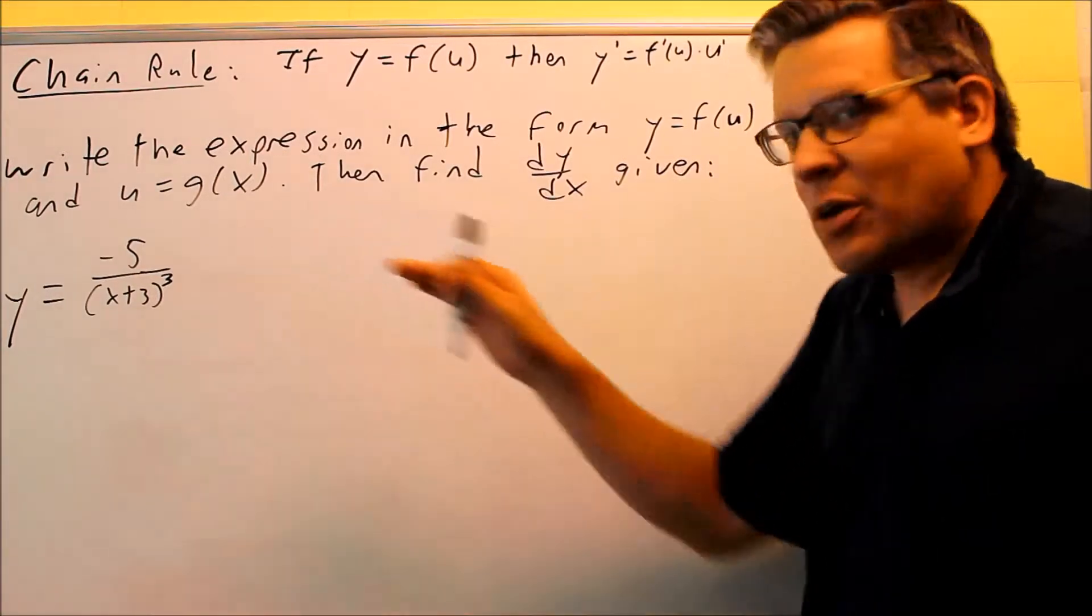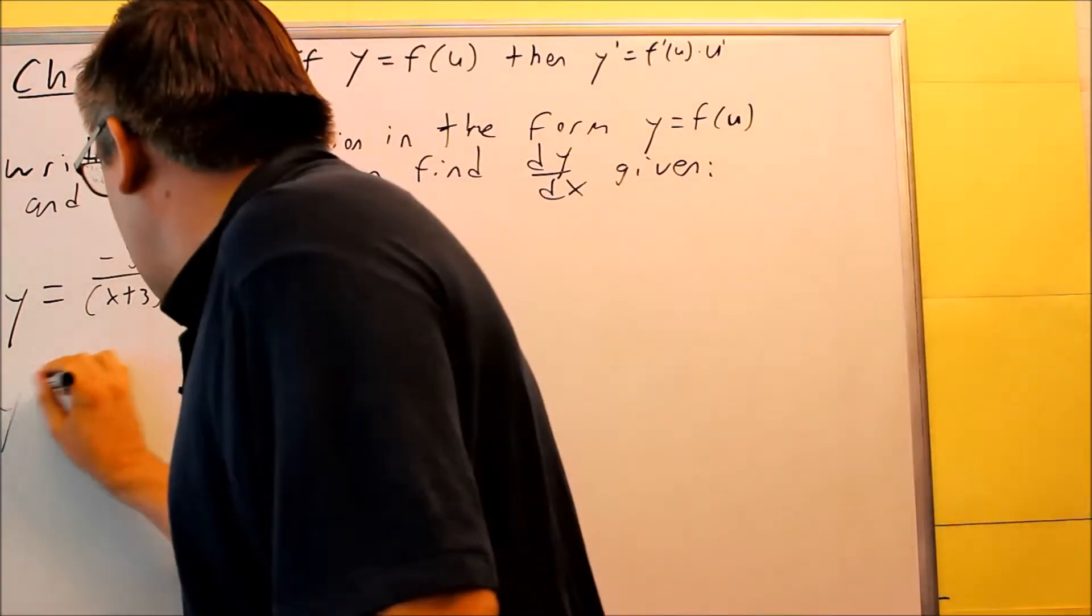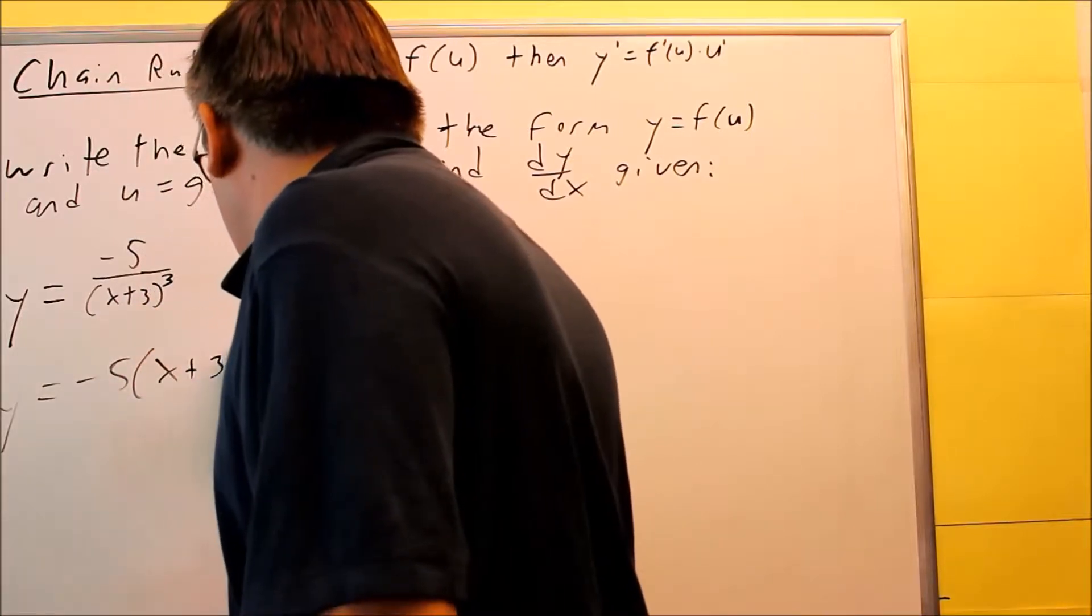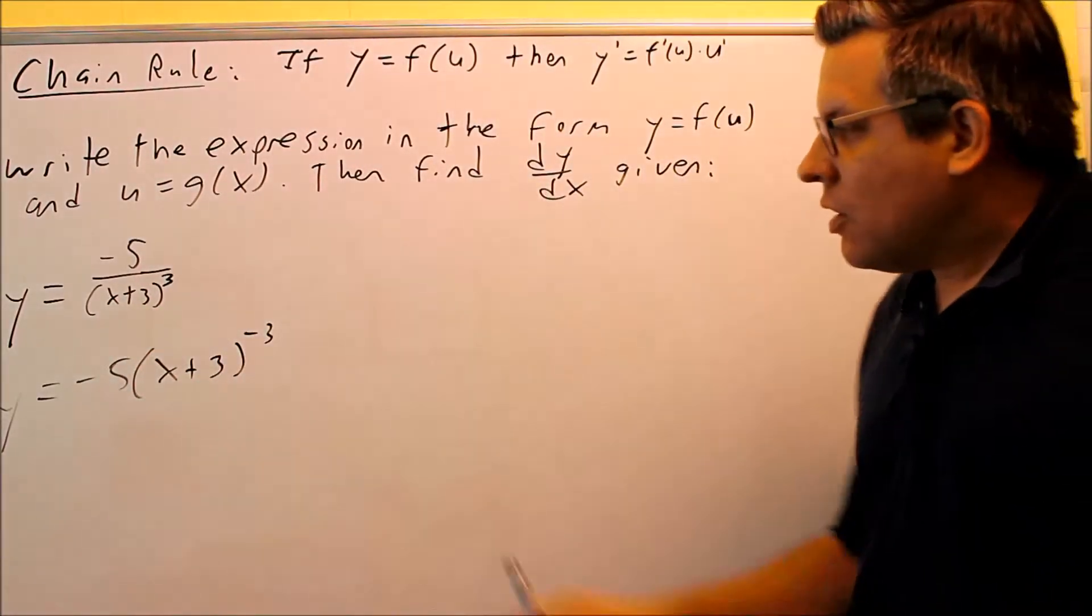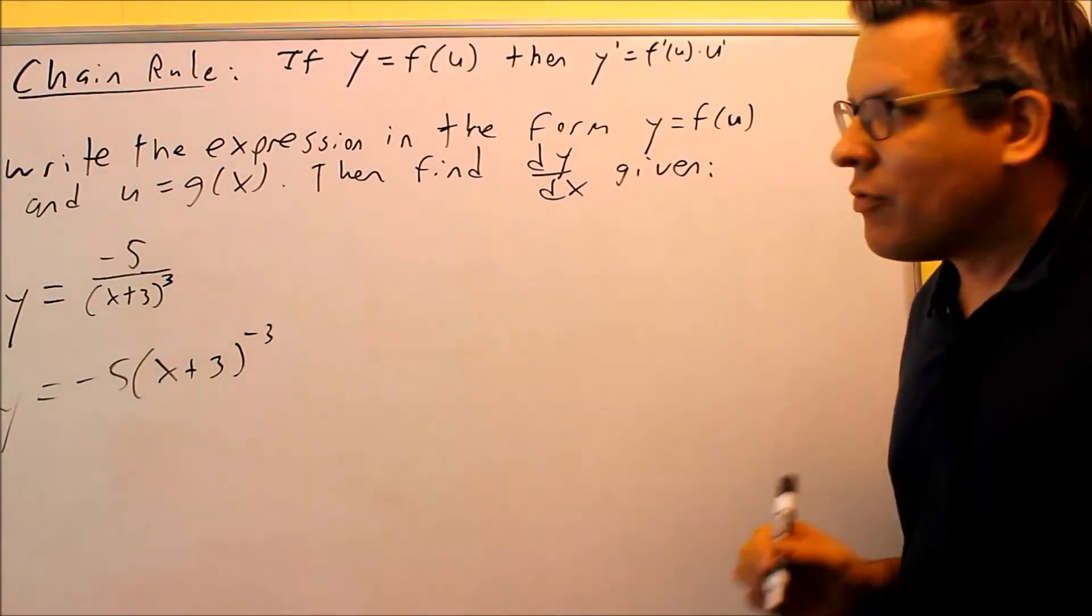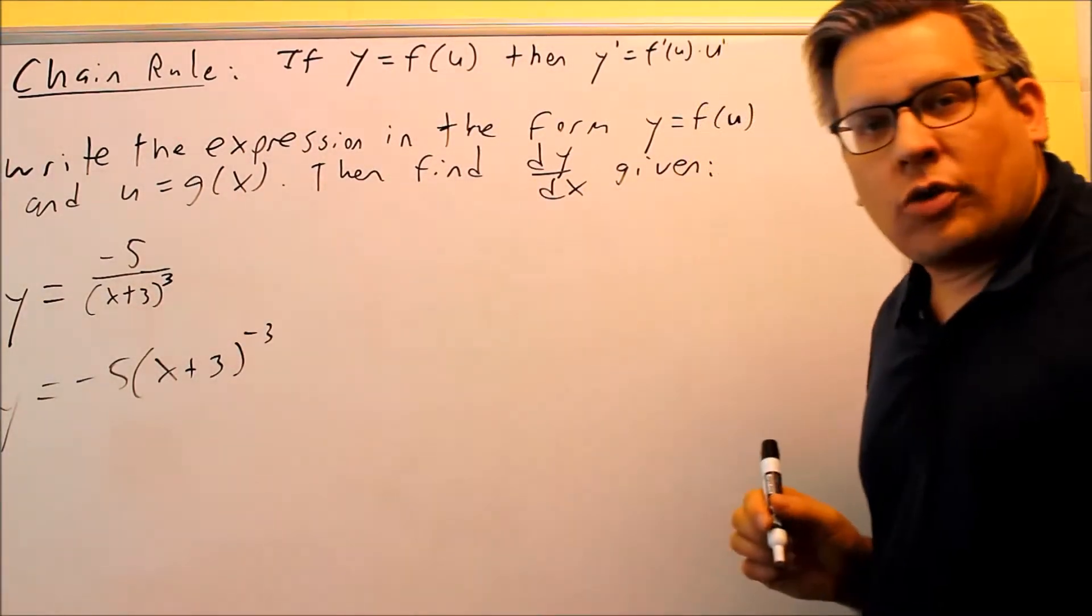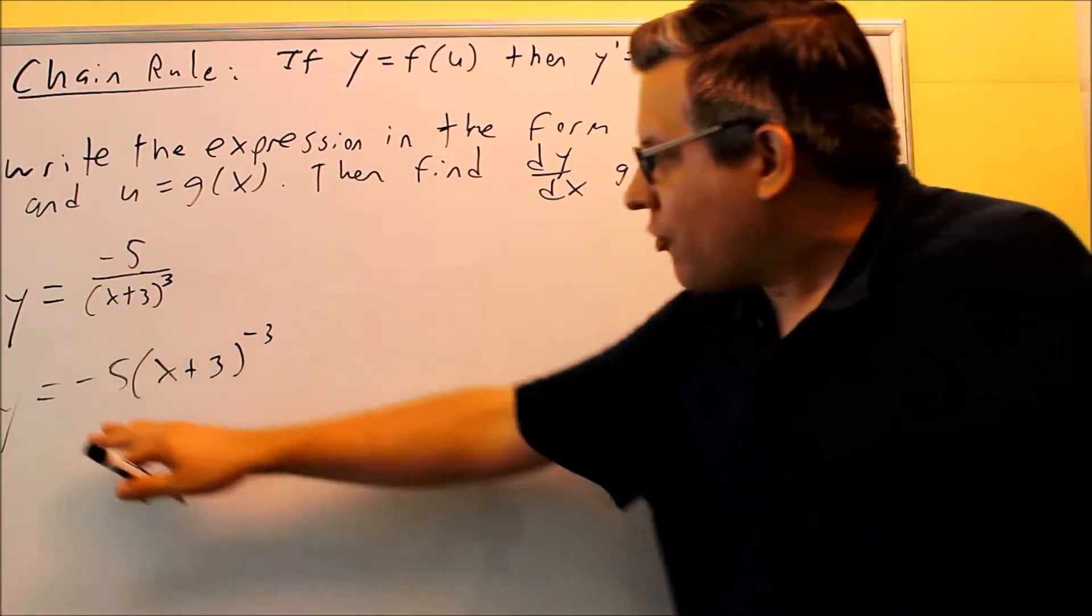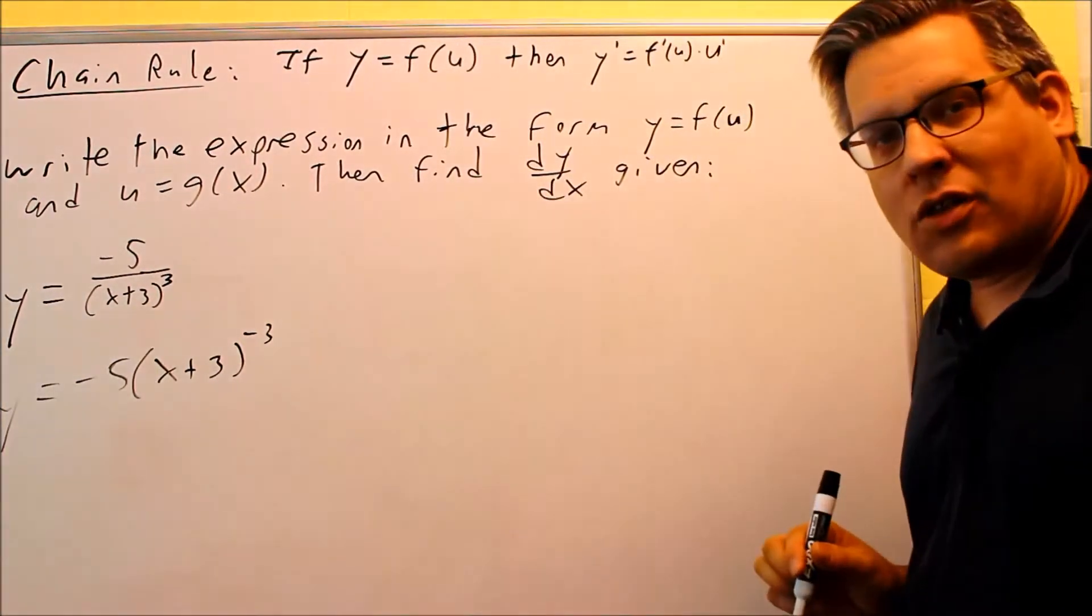Now before I jump into that, let's first rewrite this with a negative exponent. We want to do that because this avoids the quotient rule, we don't need to worry about doing that if we have it written in this form. So first we'll write it out like this.